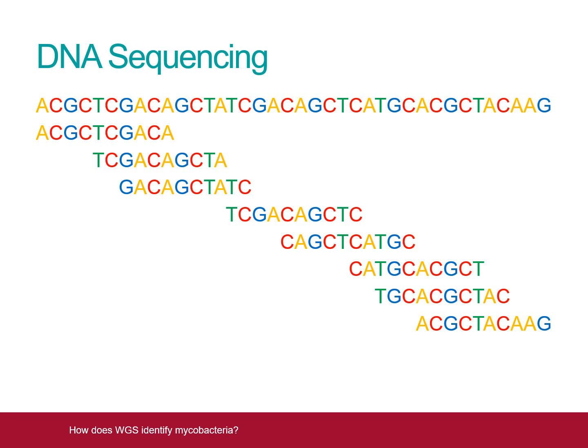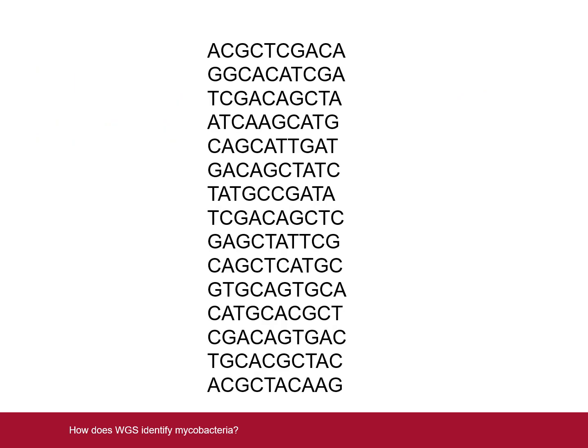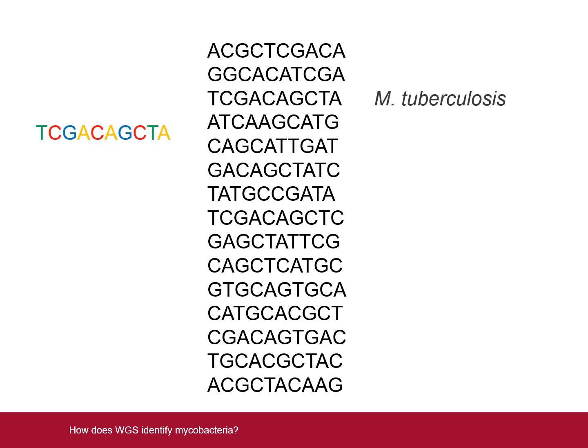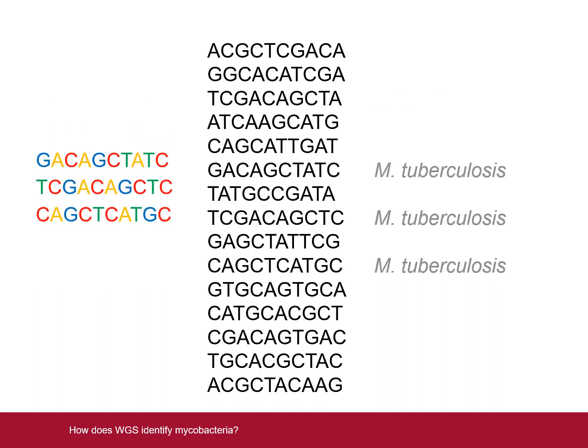Once the sequencer has generated all of these words, a powerful cluster of computers compares the words against a database containing all of the unique words for thousands of bacterial species. In this case, the first word is unique to mycobacterium tuberculosis, as is the next one, and indeed the three after that.